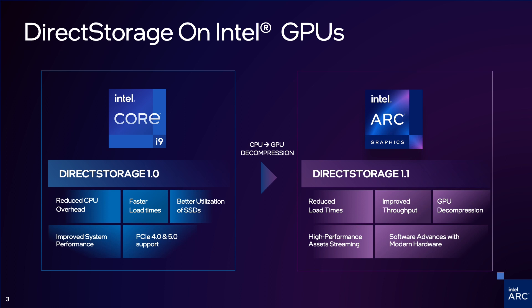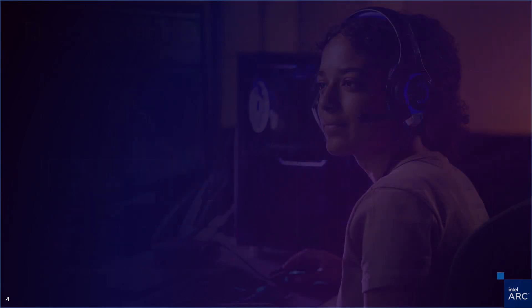GPU decompression reduces the amount of data that needs to be processed, improving the overall performance of the system and allowing for more detailed and intricate graphics to be rendered. Overall, these improvements make Direct Storage 1.1 an attractive option for applications that require high-performance storage, such as gaming, machine learning, and data analysis.